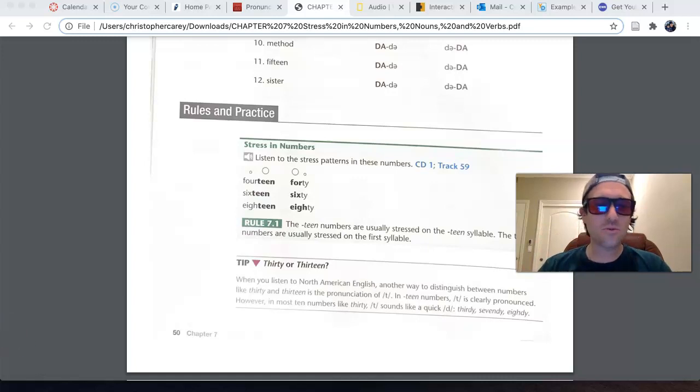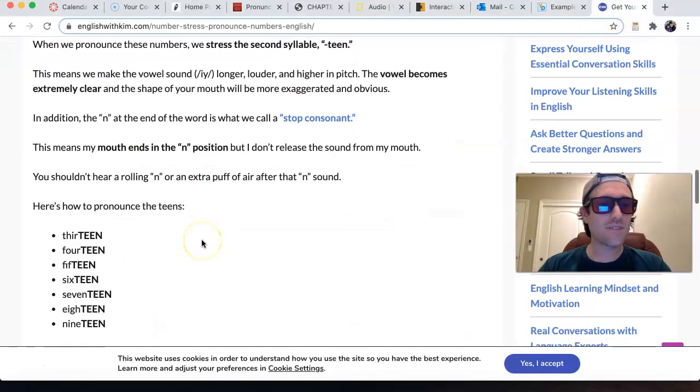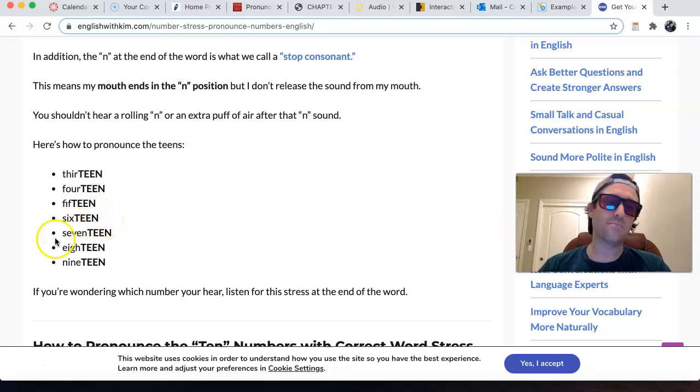And so here's the rule for word stress in numbers. Teen numbers are usually stressed on that final syllable, that second syllable, the teen syllable. Thirteen, fourteen, fifteen, sixteen, seventeen, eighteen, and nineteen.